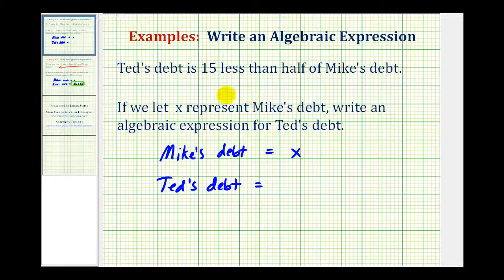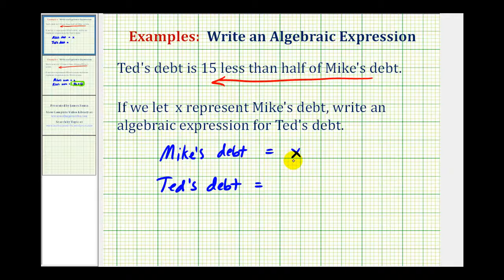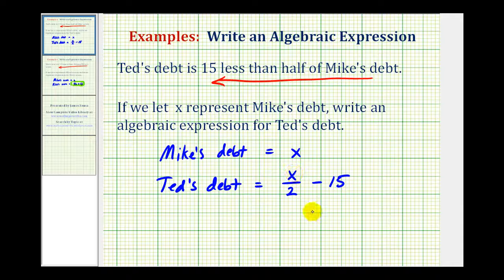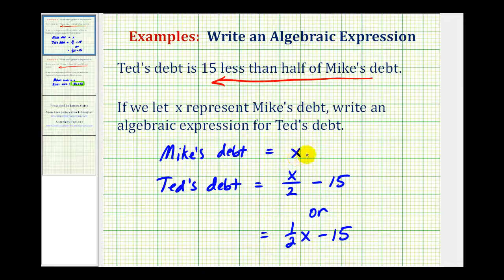Again, it's going to be helpful if we look at this in the reverse order, meaning we'll first write an expression for half of Mike's debt, and then we'll deal with the fifteen less. So to find half of Mike's debt, or half of x, there are two ways of doing this. We could multiply x by one half, or divide x by two. So if we have x and we divide by two, this gives us half of Mike's debt, but Ted's debt is fifteen less than half of Mike's debt. So from this expression, we need to subtract fifteen. And as I mentioned before, instead of having x divided by two, we could use the expression one half x minus fifteen. These two expressions would be equivalent, both expressing fifteen less than half of Mike's debt when Mike's debt is equal to x.